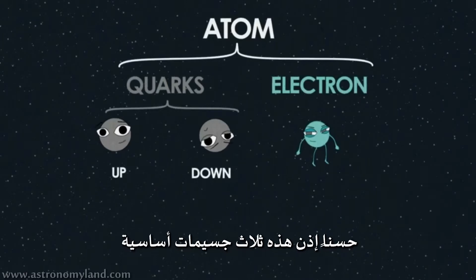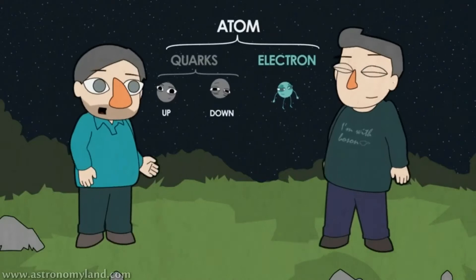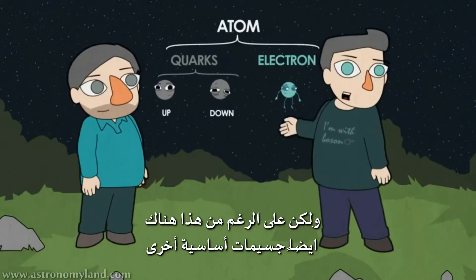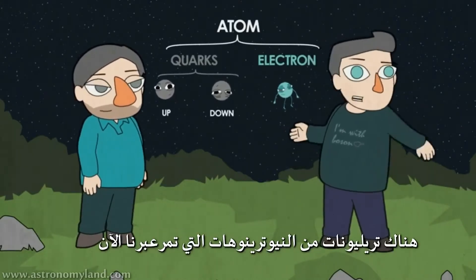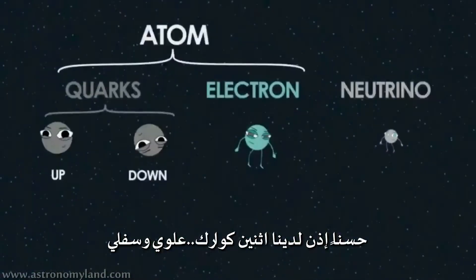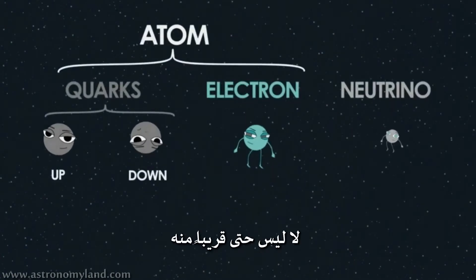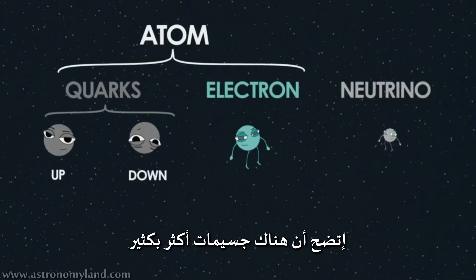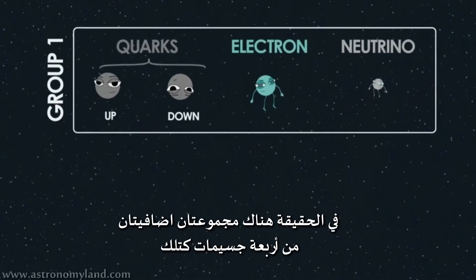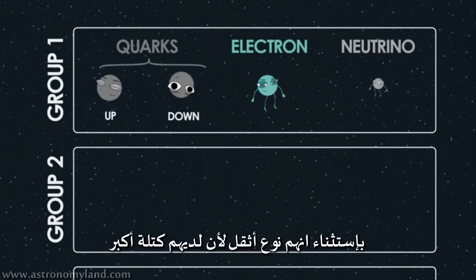So that's three fundamental particles then - two quarks and the electron. Is that what everything's made of? Almost everything in the universe is made of those things. But there are other fundamental particles - there's trillions of neutrinos passing through us right now. So we've got the up and down quark, electrons, and neutrinos. Is that it? No, not even close. It turns out there are a lot more fundamental particles than that. There are actually two more groups of four particles like that, just like our group of four, except heavier - they have more mass.